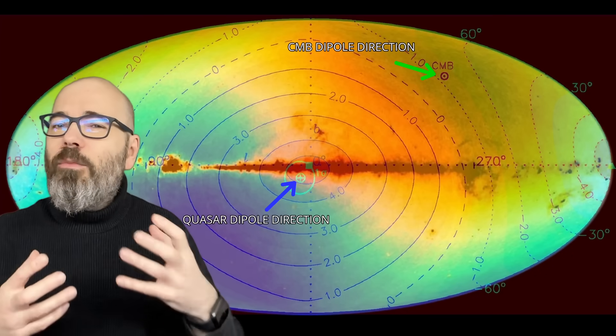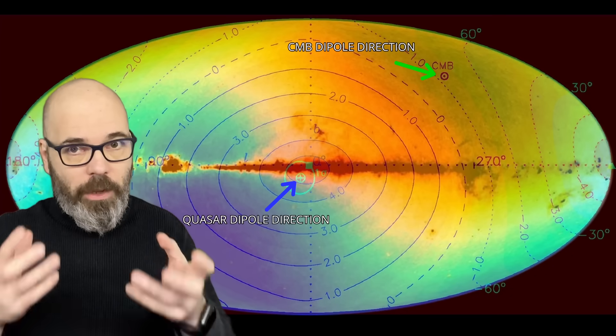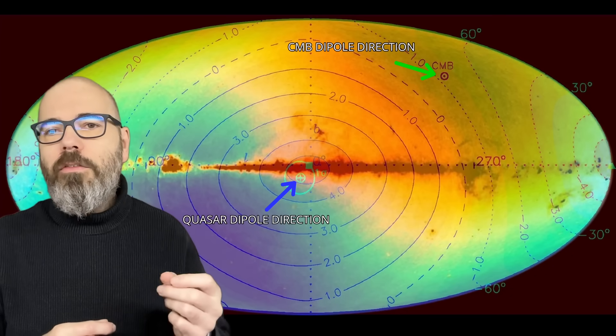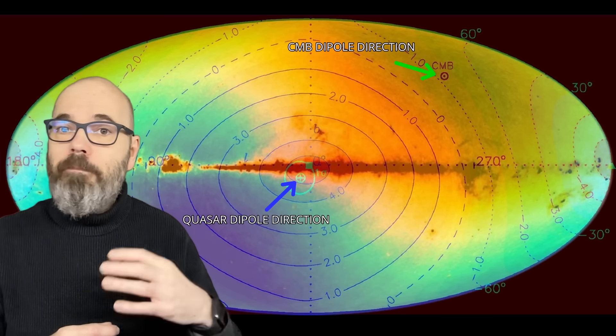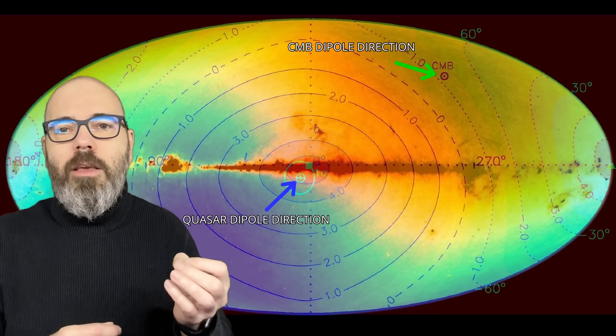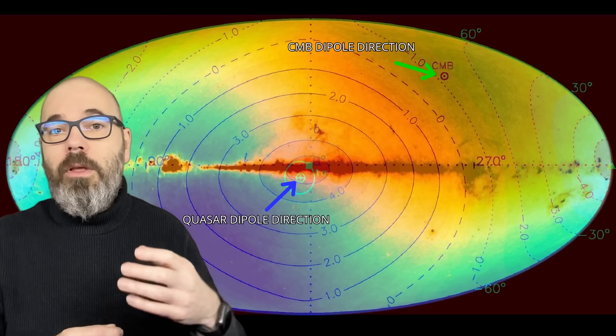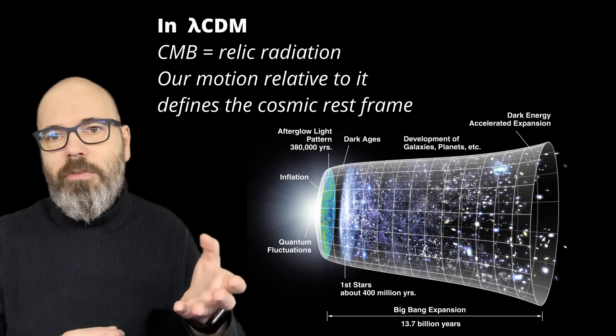This creates a dilemma with no easy answer. If the CMB is right, then the quasar results must be dismissed as error. If the quasars are right, the CMB dipole isn't motion at all, and the cosmic rest frame of lambda CDM collapses.